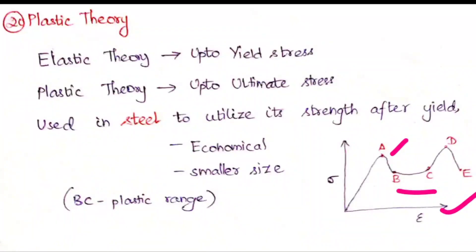When you consider up to the yield stress alone, we call that theory the elastic theory. When you consider up to the ultimate stress, we call that the plastic theory. This is the only difference.